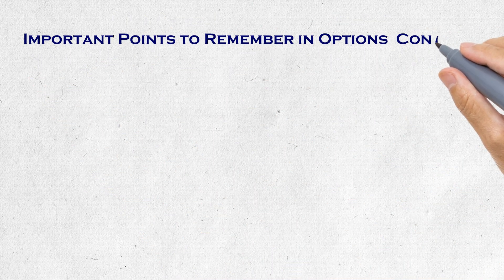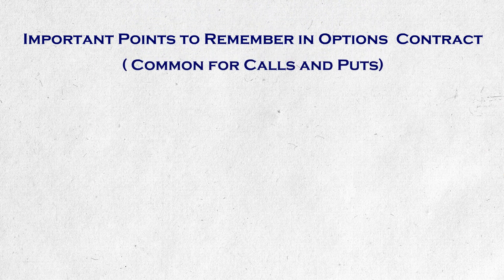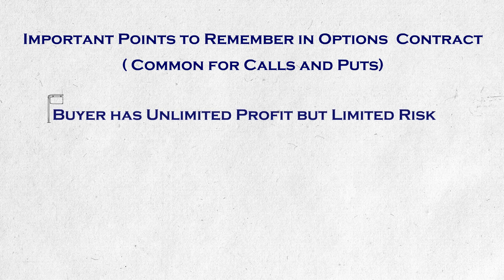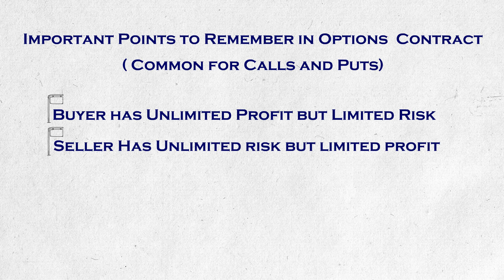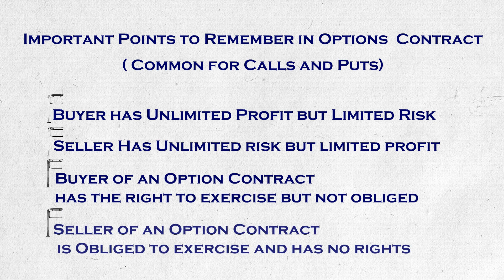So to revise the bullet points: in any options contract, be it call option or put option — buyer has unlimited profit but limited risk; seller has unlimited risk but limited profit. Buyer of an option contract has the right to exercise but is not obliged. Seller of an option contract is obliged to exercise but has no rights.